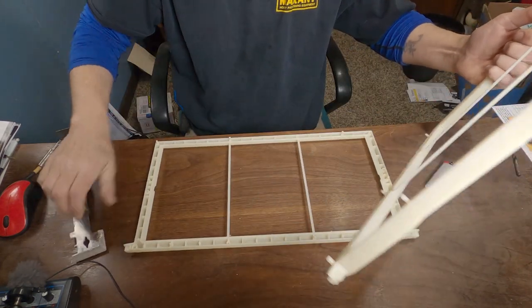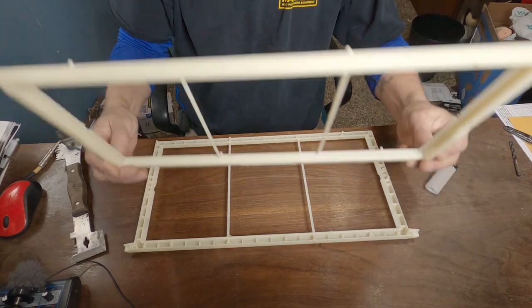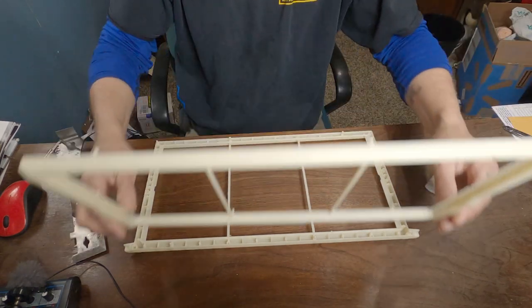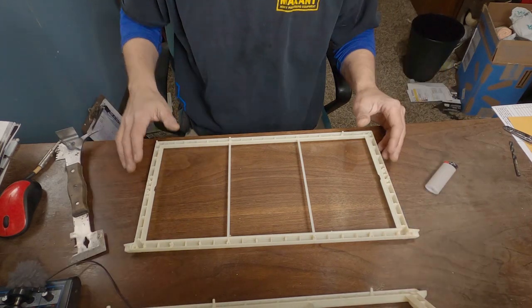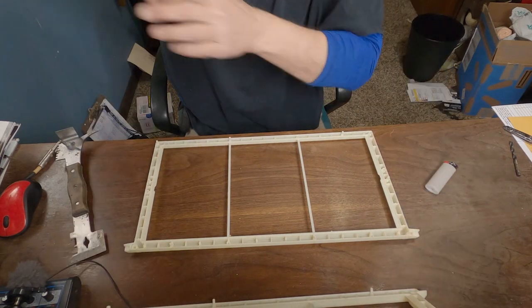We're going to do that all the way around until we get it completely apart. Now that we've got it apart, I don't know that it matters which side you have down on your desk. So I am going to set this half down and we're going to start off with a piece of plastic foundation.